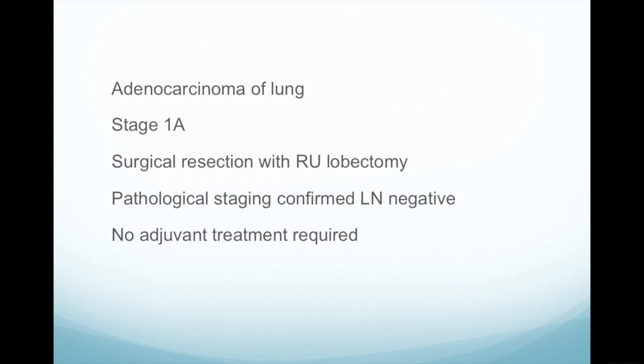The pathology came back confirming that this was an adenocarcinoma of the lung. Based on the staging — demonstrating no metastases to the mediastinal lymph nodes or beyond — this was a stage 1A tumour. The most appropriate treatment is surgical resection with a right upper lobectomy, done with curative intent. The pathological staging after the lobectomy confirmed that the lymph nodes were all negative, which is a very good prognostic sign, and tells us there will be no benefit from any adjuvant therapy. So this patient does not need any chemotherapy and should be cured of their tumour.